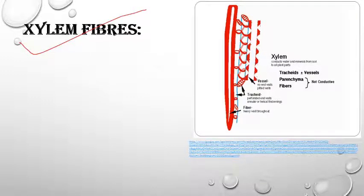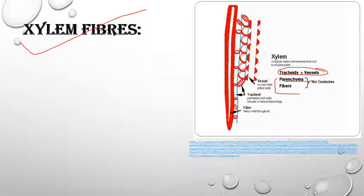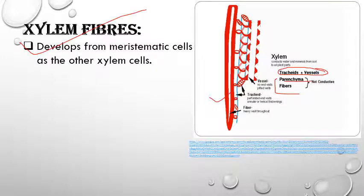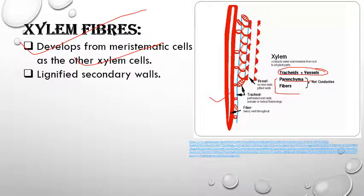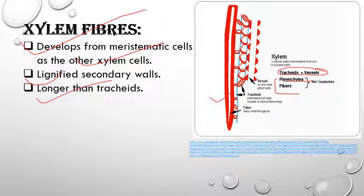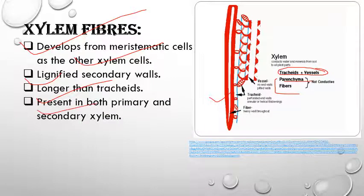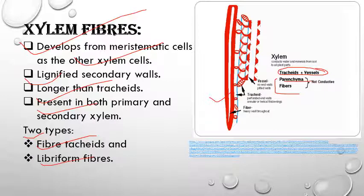Xylem fibers are also known as wood fibers. Among xylem components, tracheids and vessels are the main conducting tissues, while parenchyma handles storage and fibers are non-conductive. Xylem fibers are long structures having narrow lumen with tapering ends and thick walls; their main function is to provide mechanical support to the plant. Their walls are lignified. Fibers are longer than tracheids and are of two types: fiber tracheids and libriform tracheids.